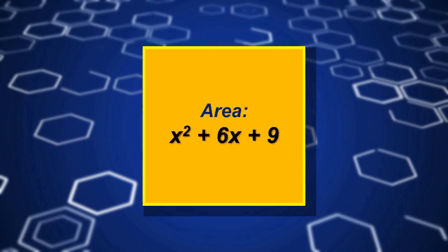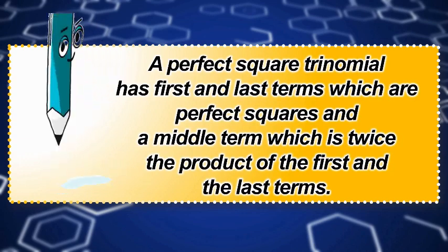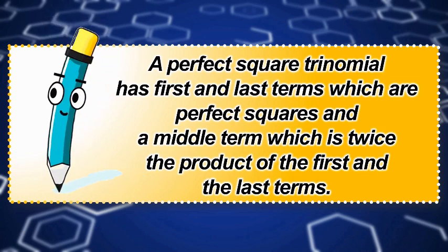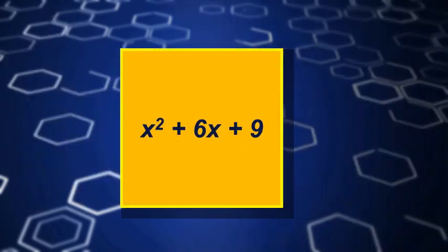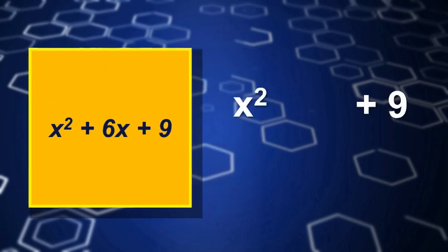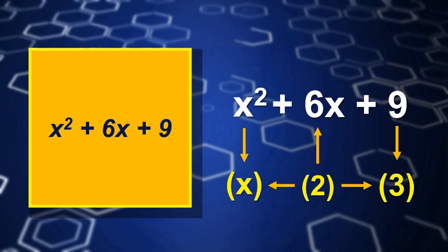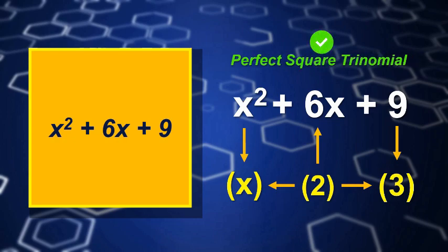But for areas represented by a perfect square trinomial, such as x squared plus 6x plus 9 square units, we follow some simple steps. A perfect square trinomial has first and last terms which are perfect squares, and a middle term which is twice the product of the first and last terms. Let us use x squared plus 6x plus 9 for example. The first and last terms are perfect squares, with x and 3 as their square roots. Twice the product of these roots is equal to 6x, which is our middle term. If these conditions are met, then the trinomial is a perfect square trinomial.